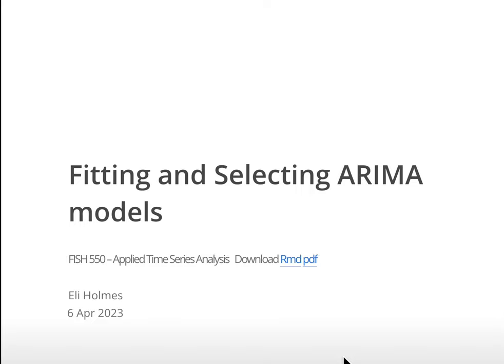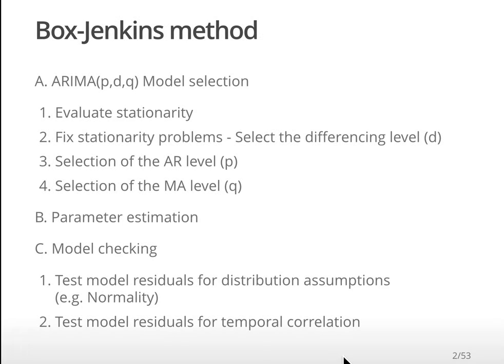Now we're going to talk about the process of actually fitting ARIMA models and run through what's called the Box-Jenkins method. With the Box-Jenkins method, we're going to be selecting an ARIMA model - a model that has differencing, which is this part in the notation. That's how much differencing we have, and that's going to create the stationarity. Once we have that transformed stationary data, we will fit an ARIMA model with the P component for the AR part and Q for the MA.